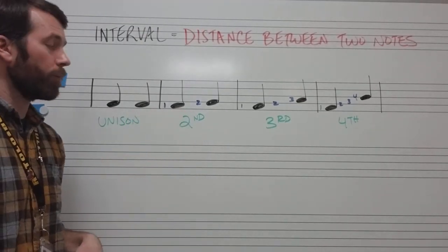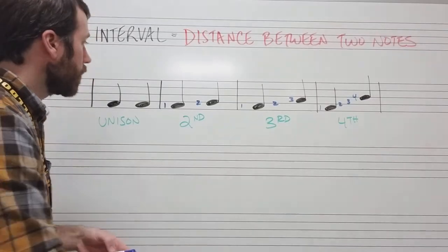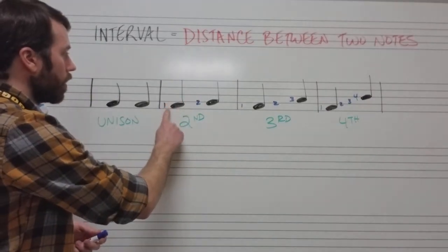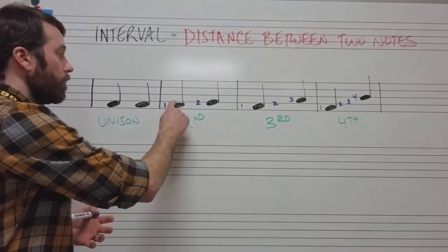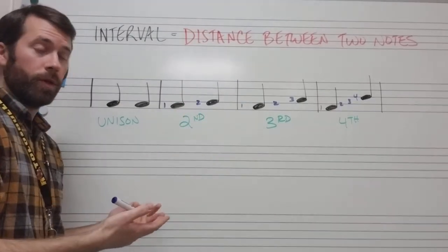The next example is what we call a second interval, because we always start counting the first note as number one, and then the next line or space up, that's number two.